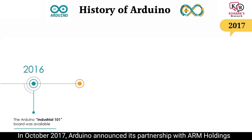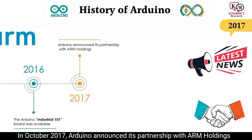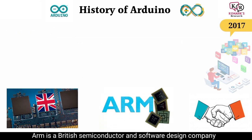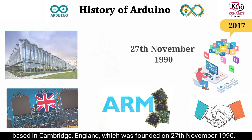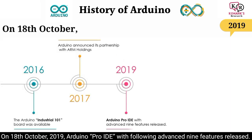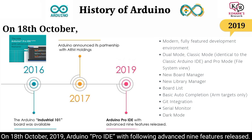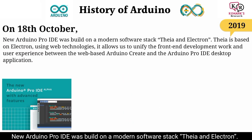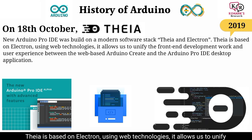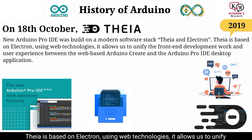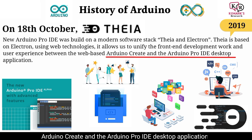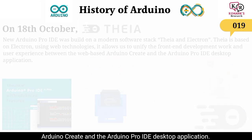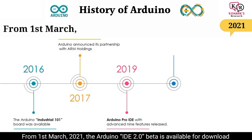In October 2017, Arduino announced its partnership with Arm Holdings — a British semiconductor and software design company based in Cambridge, England, founded on 27 November 1990. On 18 October 2019, the Arduino Pro IDE was released with nine advanced features. The new Arduino Pro IDE was built on a modern software stack using Theia and Electron. Theia is based on Electron using web technologies, allowing unification of front-end development work and user experience between the web-based Arduino Create and the Arduino Pro IDE desktop application.